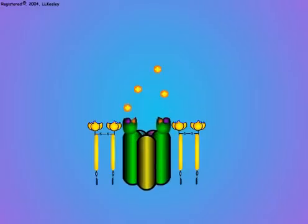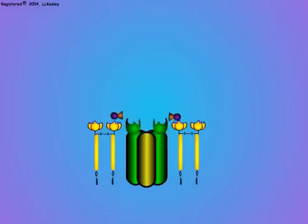The activated channel opens and sodium ions flow through the channel and into the cell. When the acetylcholine comes off the channel receptors, the channel closes. This stops the sodium flow into the channel.